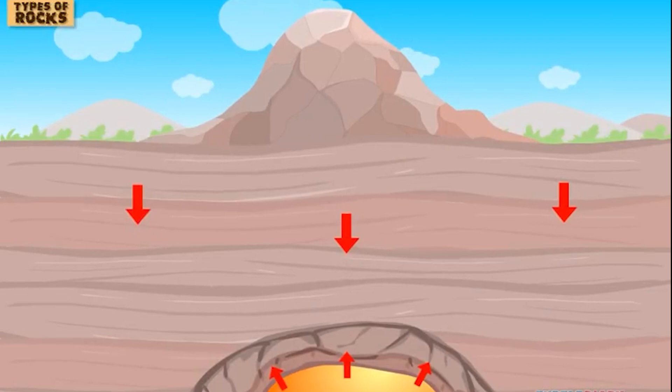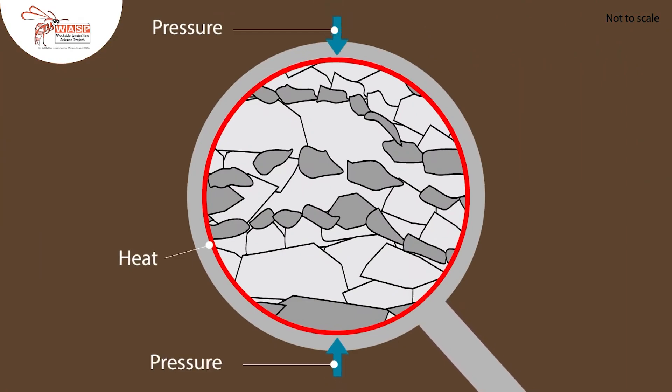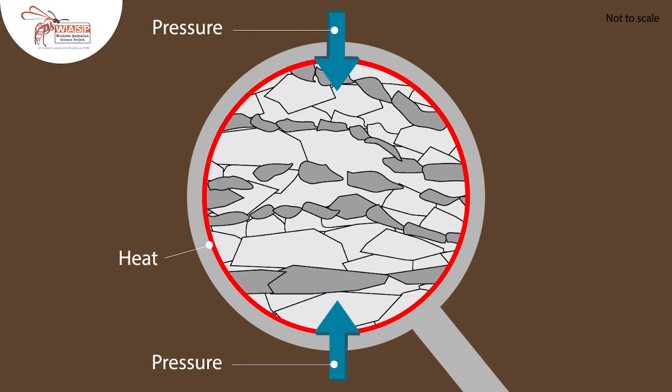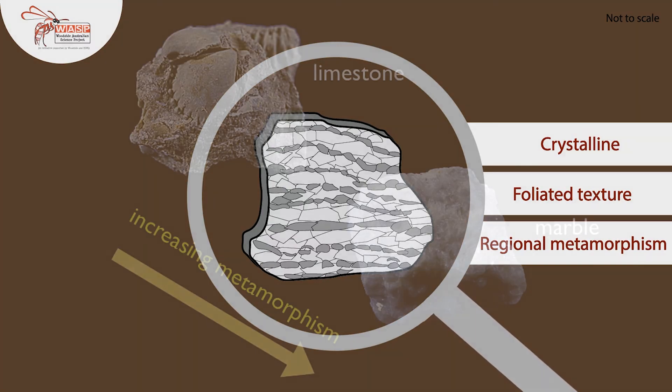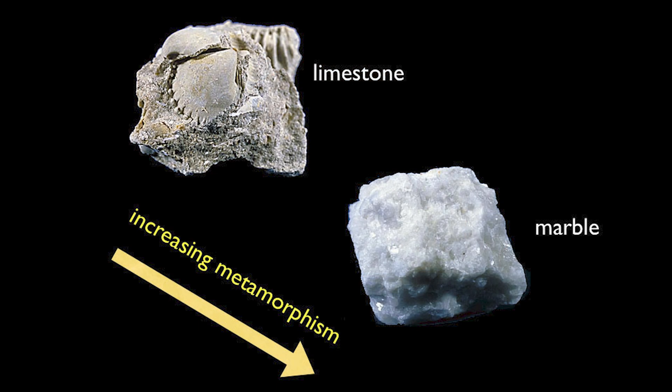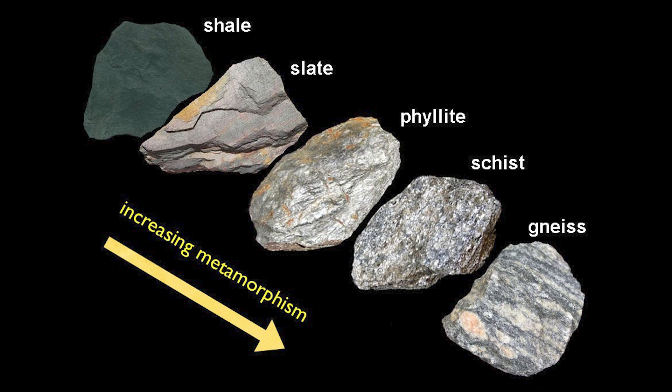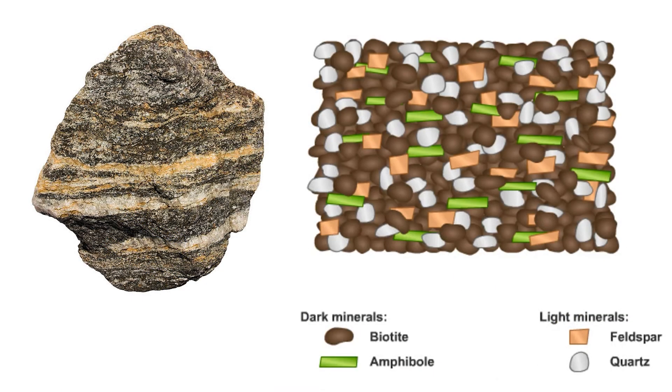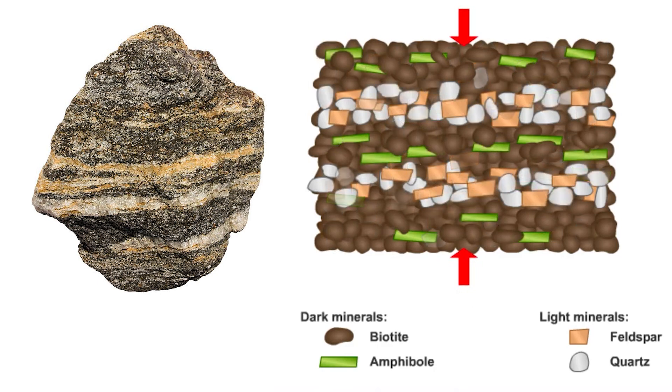When rocks are subjected to extreme heat and pressure, they transform into metamorphic rocks. Imagine a rock being squeezed and heated until its minerals recrystallize, forming a new, harder rock. For example, limestone can transform into marble, and shale can turn into slate. Metamorphic rocks often have a unique foliated appearance, with layers or bands of minerals to show how they've been shaped by intense geological forces.